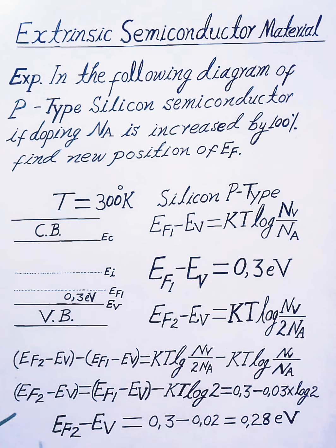So the new position of Fermi level EF2 minus EV equals the first position of Fermi level EF1 minus EV minus KT log 2.